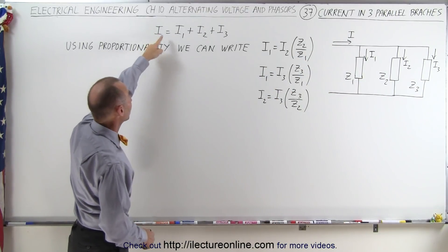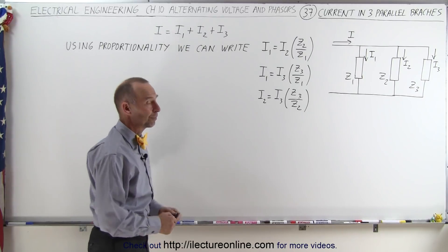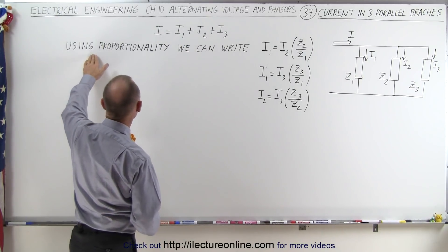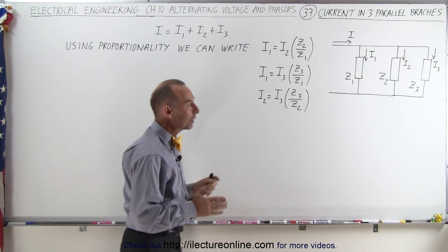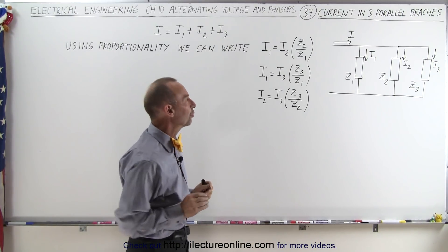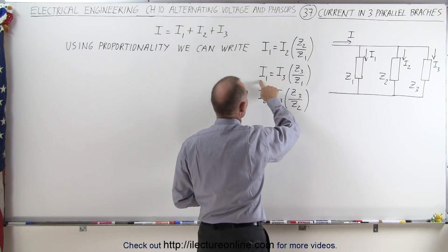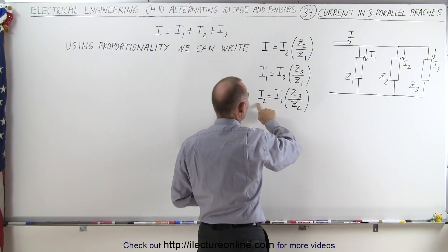The three currents should add up to the total current entering the circuit, so we can say that I, the total current, is equal to the sum of the three currents. So what we want to do is use a method of proportionality. We can always compare any two currents with one another, for example, compare current I1 to current I2, current I1 to current I3, and current I2 to current I3.